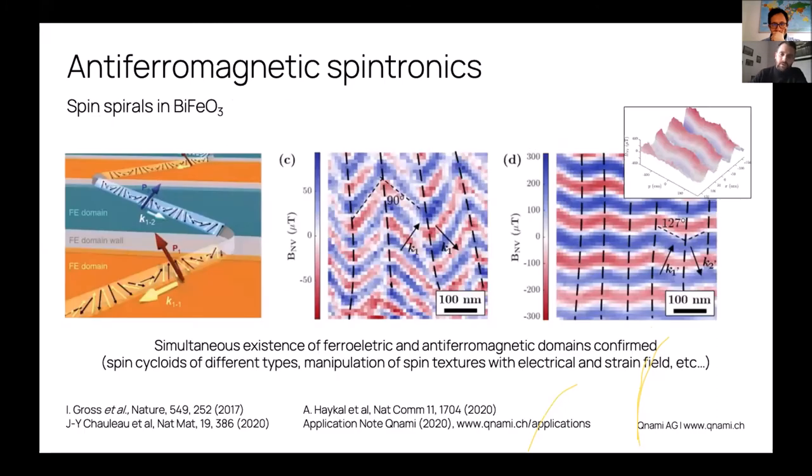Here I'm just giving a snapshot of other antiferromagnets. There has been a recent exploration of multiferroic materials such as bismuth ferrite. Here the idea and the demonstration that was made using scanning NV microscopy is that you have a coexistence between antiferromagnetic domains and ferroelectric domains. It's a fairly complicated structure—you have this magnetic spiral, a spin cycloid it's called, and you can see that it bends as you cross a ferroelectric domain, which we can see clearly in these pictures.